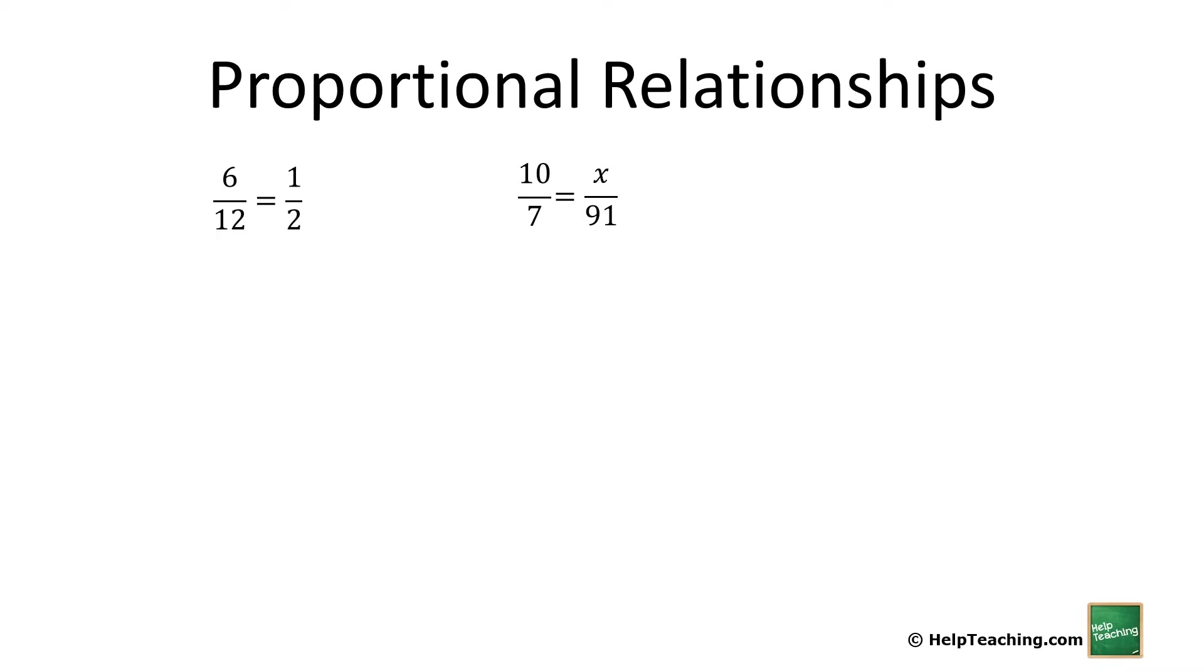Let's say we have 10/7 and we need to convert this to something over 91. We start with the number above or below what we don't know, in this case 91. We cross-multiply, so diagonally multiply times 10. Then we divide up or down, so 910 divided by 7, and the answer goes in our variable, which is 130. This is great because it doesn't matter how big or complicated the numbers are. Cross-multiply and divide.